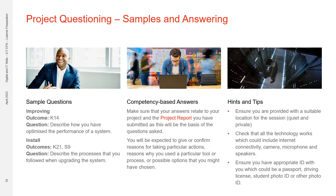We are now going to look at some possible questions you may be asked. Bear in mind these will be based on your project, so these are just for reference. The first is looking at improvements and outcome K14. The question is: describe how you have optimised the performance of a system. The second is looking at installation and outcomes K21 and S9. The question is: describe the processes that you followed when upgrading the system. When answering questions, ensure you are referring to the project carried out for your report. You will be expected to give or confirm reasons for taking actions, why you have used particular tools and processes, or possible options you might have chosen during the project.